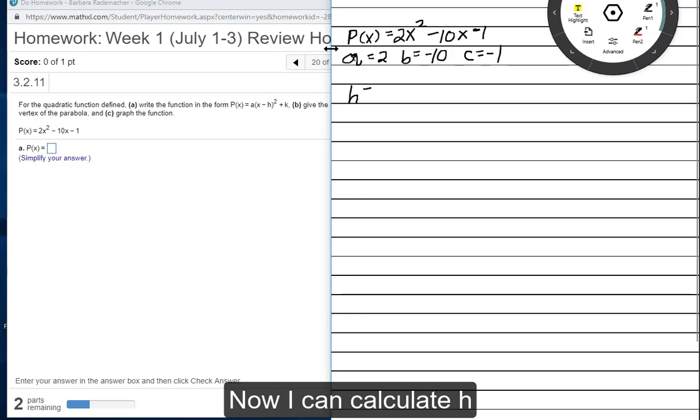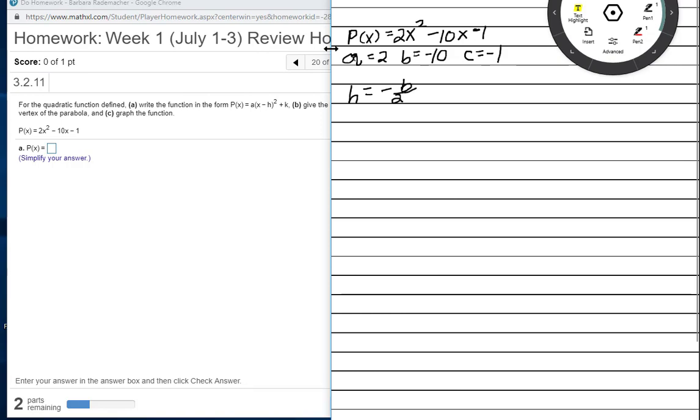Now I can calculate H from the formula negative B over 2A. So that'll be negative, negative 10 over 2 times 2, which is 10 over 4, positive, which is 5 over 2. Trying to make it a little neater there. So H equals 5 over 2.